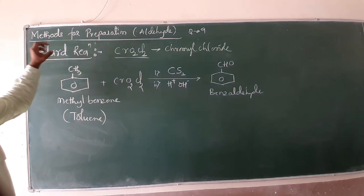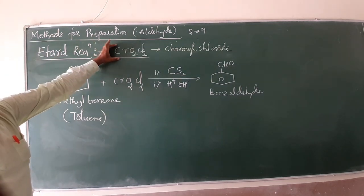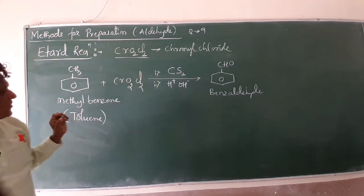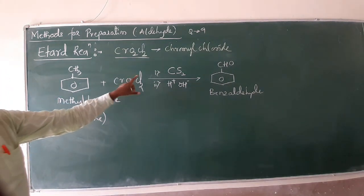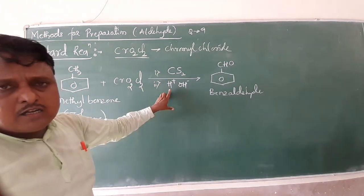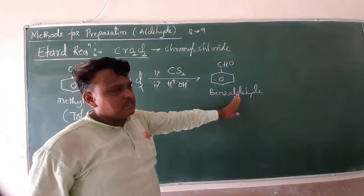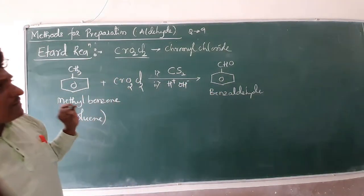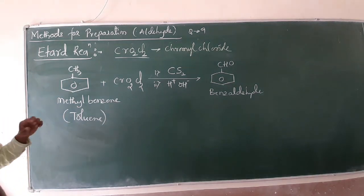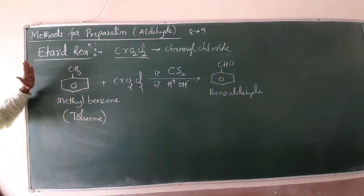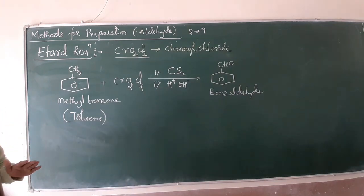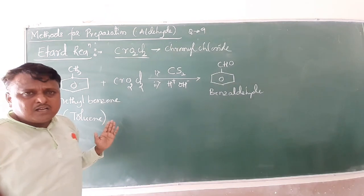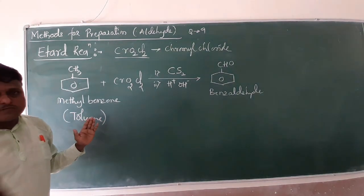This is a simple Etard reaction. I repeat once again, Etard reaction, reagent chromyl chloride, CrO2Cl2. Here, toluene reacts with chromyl chloride gas in presence of carbon disulfide and acid hydrolysis to form benzaldehyde. Today we have two reactions: one, Stephens, and another one is Etard reaction. Keep practicing friends, and in the next video, we continue Rosenmund and Gattermann-Koch reaction. Thank you.